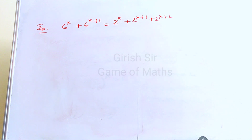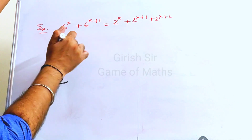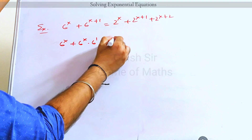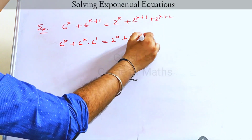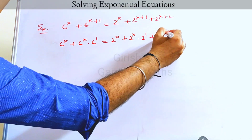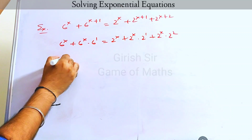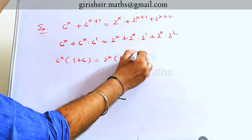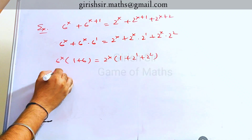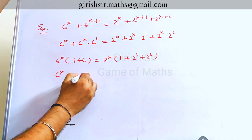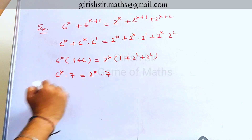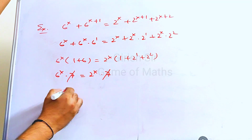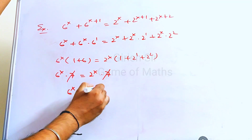Let's see another example. This equation could be rewritten using properties of exponents. Now if you take 6 raised to x common on the left-hand side and 2 raised to x common on the right-hand side, and cancel the common factor, you get 6 raised to x equal to 2 raised to x.